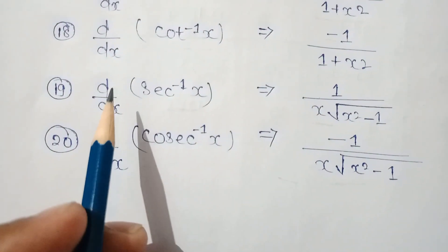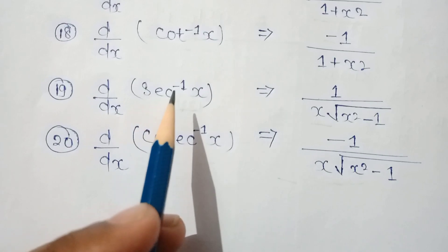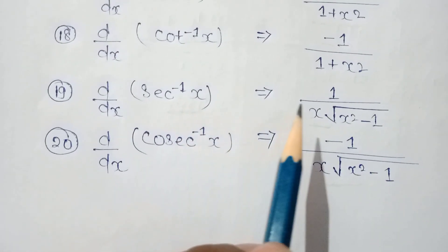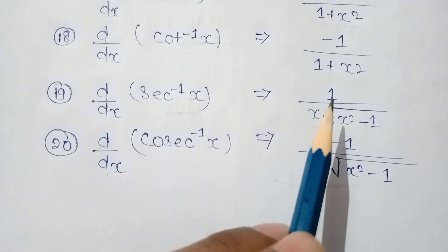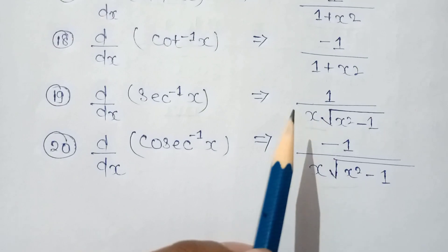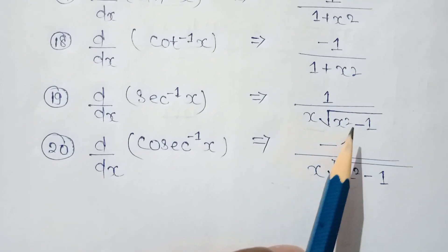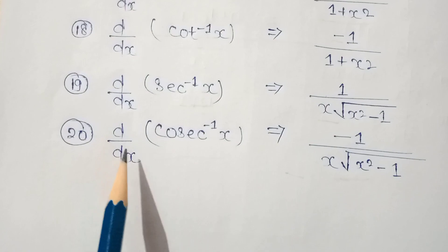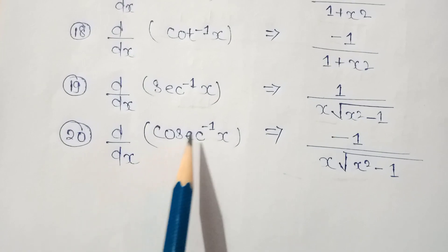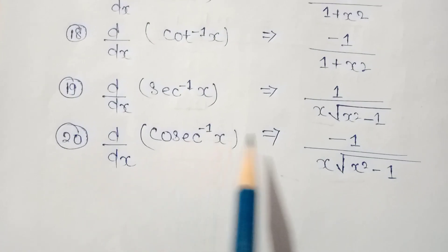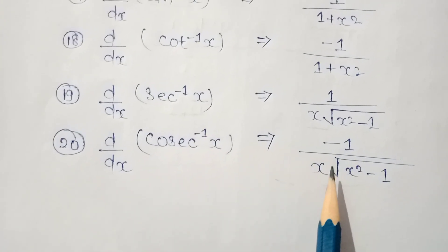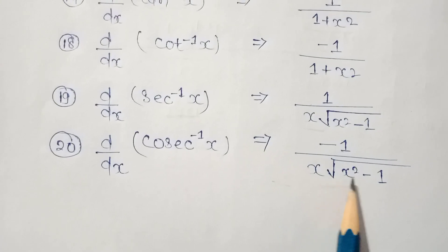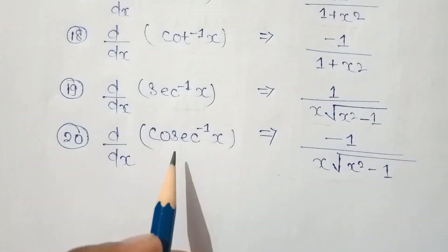d by dx of sec inverse x is equal to 1 upon x root under x square minus 1. d by dx of cosec inverse x is equal to minus 1 upon x root under x square minus 1.